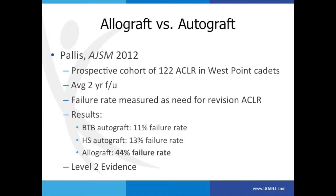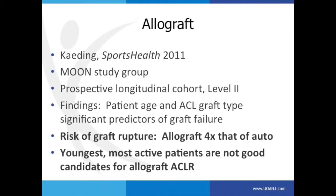This is level two evidence, good evidence, and these are big numbers. This is a different population — young, active people — but it was pretty eye-opening as to the potential failure rates we're facing. Keating is part of the MOON study group — the National Multicenter Orthopedic Outcomes Network — which is prospectively studying ACL injuries and giving us a lot of good data. They noted that allograft carries a four-times risk of failure compared to autograft, and that the youngest, most active patients probably are not good candidates for allograft ACL reconstruction.